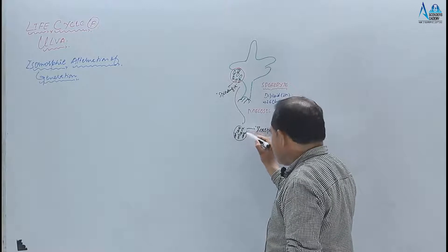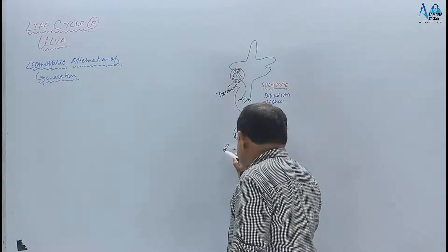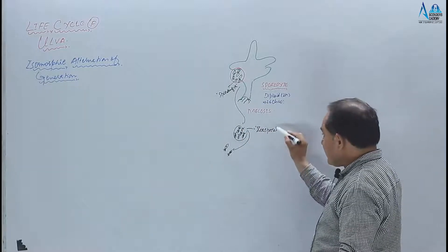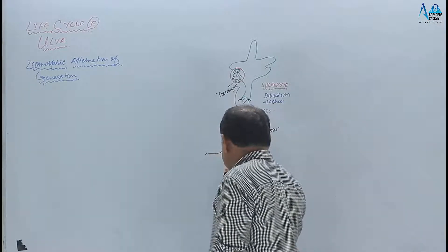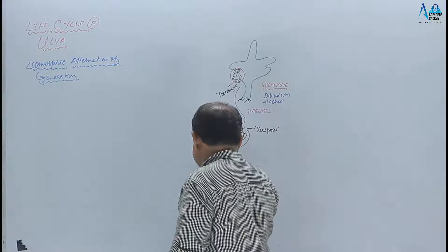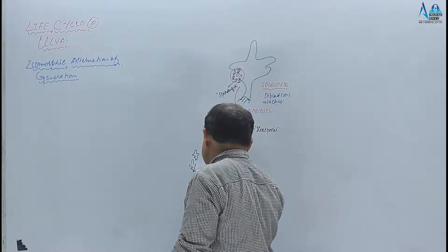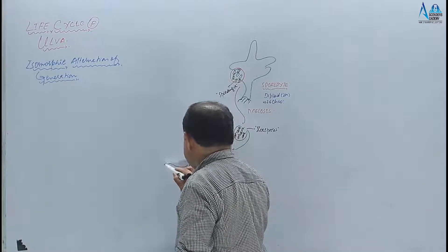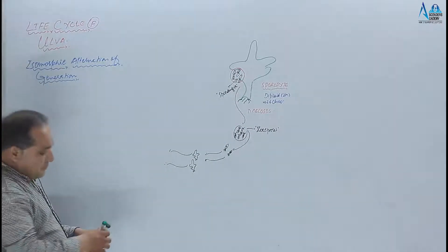Meiosis division hone se haploid zoospores taiyar ho jaate hain. Yeh zoospores parental sporangia se nikalte hain. Yeh quadri-flagellated zoospores apna swimming period pura karenge, apne development ko pura karenge, and they will germinate into new structures called gametophytes.